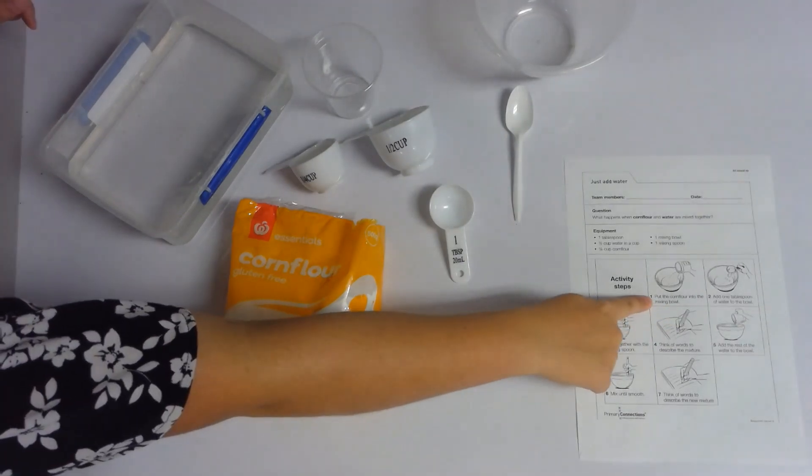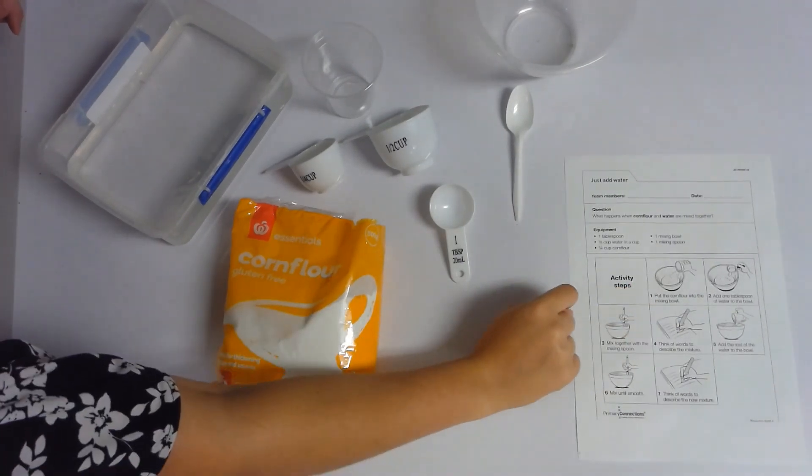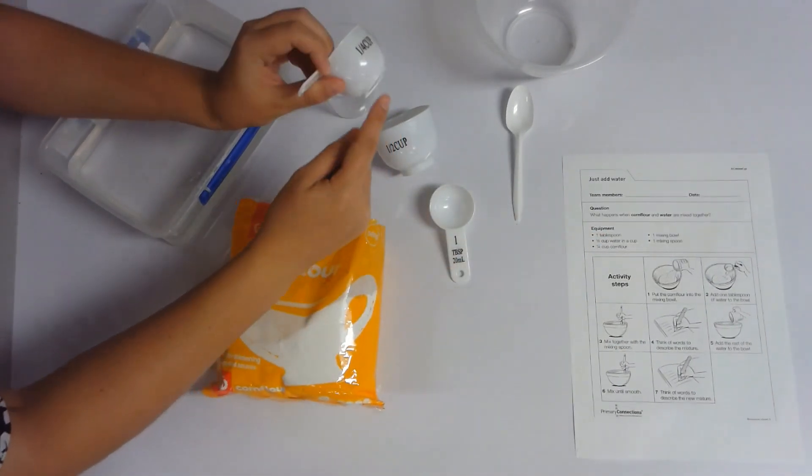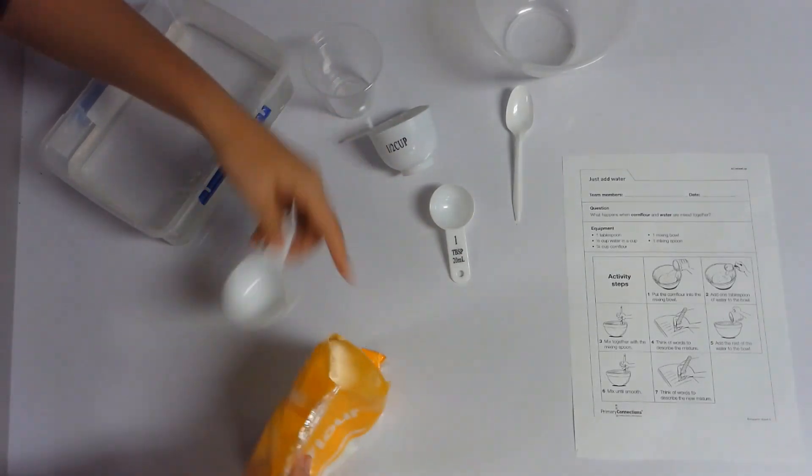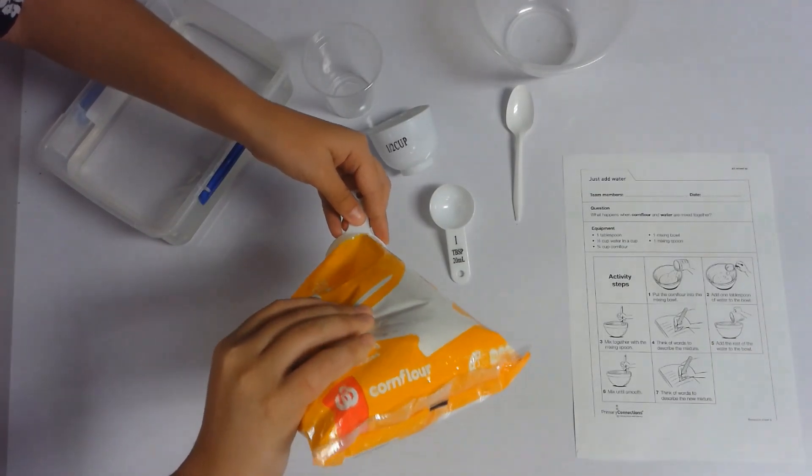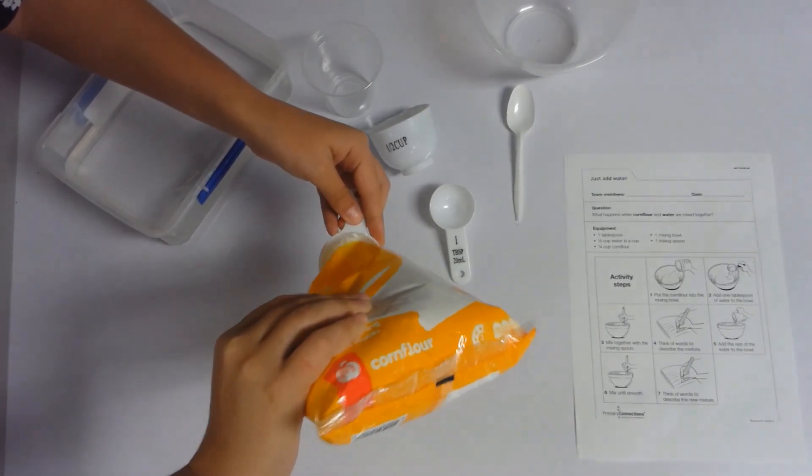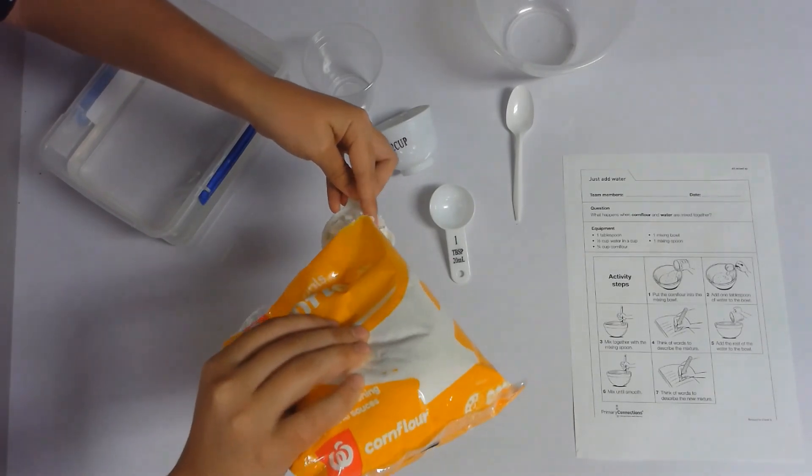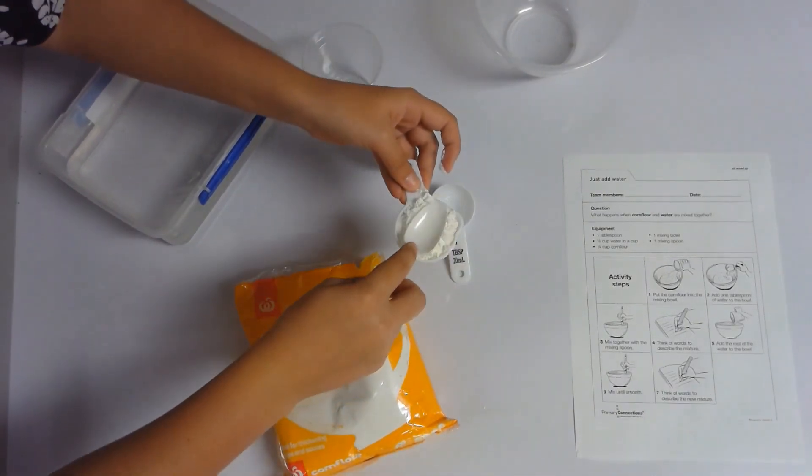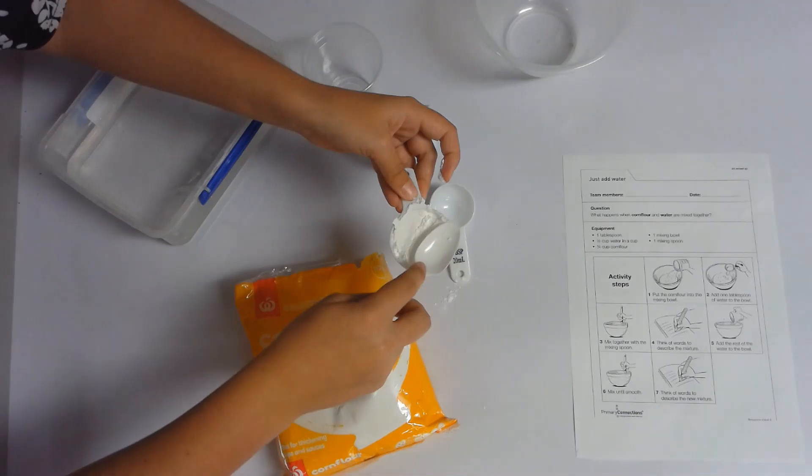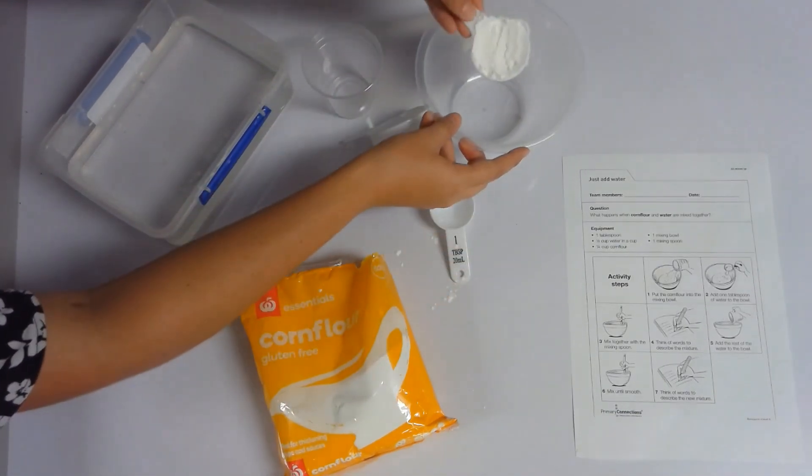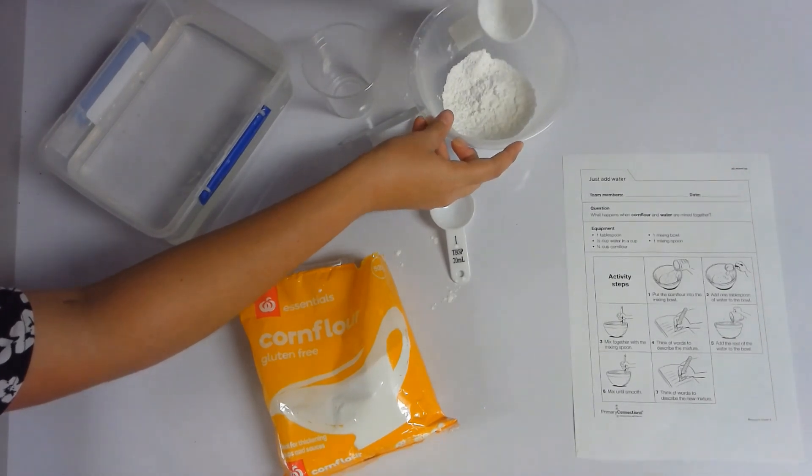Okay, our first step boys and girls is to put the corn flour into the mixing bowl. Now, I need a quarter cup of corn flour, which is this cup here, where it says quarter cup. I'm getting my corn flour and I'm going to pour it carefully into the cup, not to spill and make much mess. It's okay to make a little bit of mess. Now, I might just get my spoon and make sure I've measured it accurately. Now, I'm going to pour it into the mixing bowl over here. First step done.